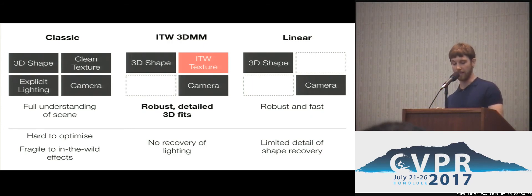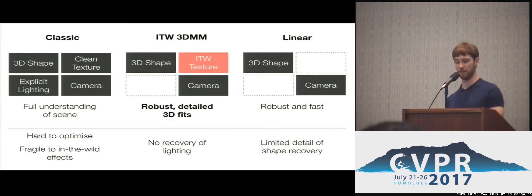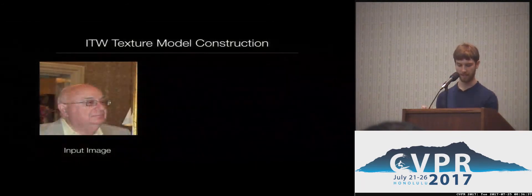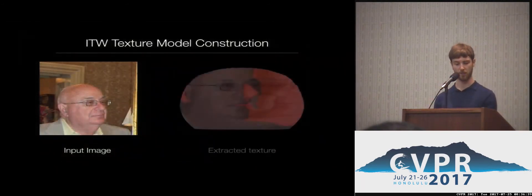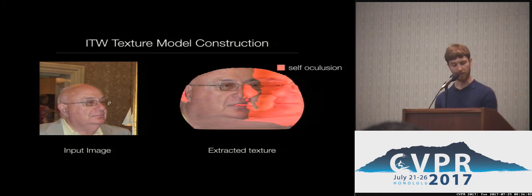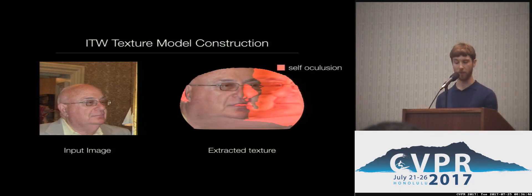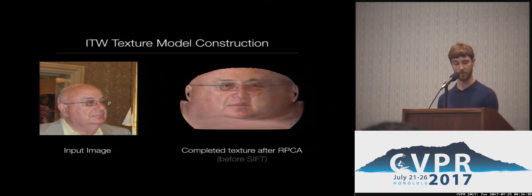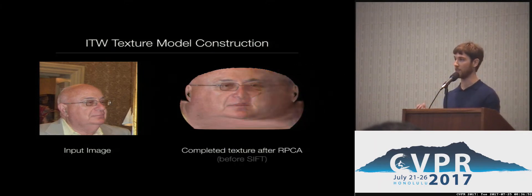To construct our in-the-wild texture model, we need to extract per-vertex pixel values from a large collection of in-the-wild images. Due to self-occlusion, this texture basis will always be incomplete, so robust PCA with missing values is first used to complete the samples before a PCA basis is used to complete the texture model.